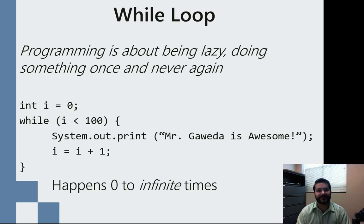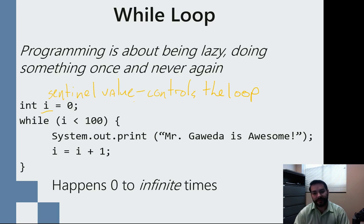So we can think about that same print statement. Mr. Gaweda is awesome. One of the ways we can do that is we can create something known as a sentinel value. Sentinel value. It's just saying that this controls the loop. Controls the loop. Then you can see that I have here my conditional statement as long as i is less than 100. I started out as 0, so i less than 100, 0 less than 100, that's true. System.out.print, Mr. Gaweda is awesome. Now, because of how a conditional operates, I have to change the conditional statement.